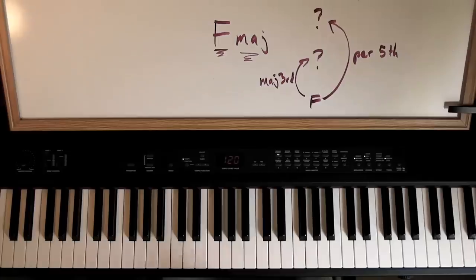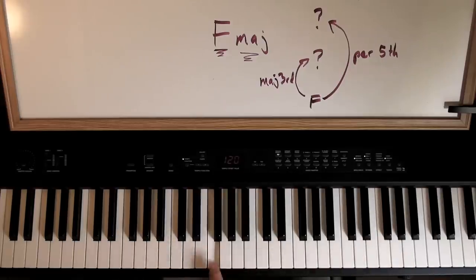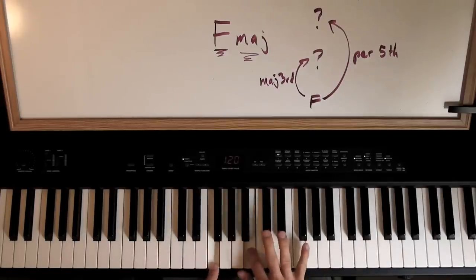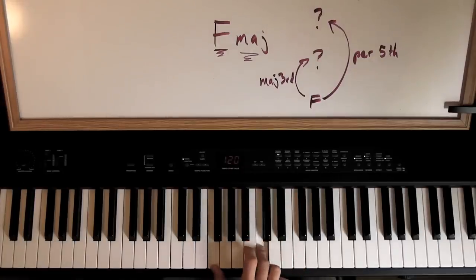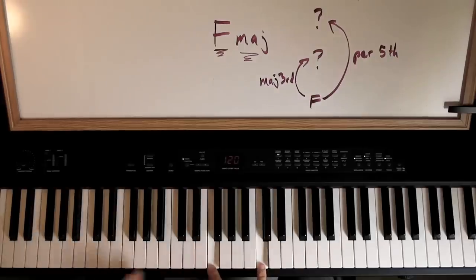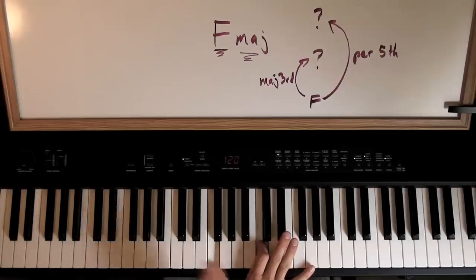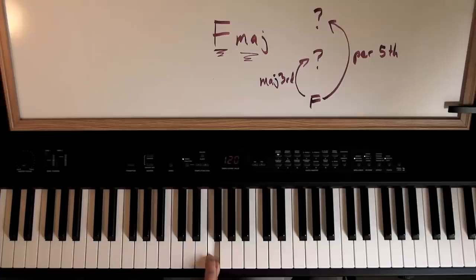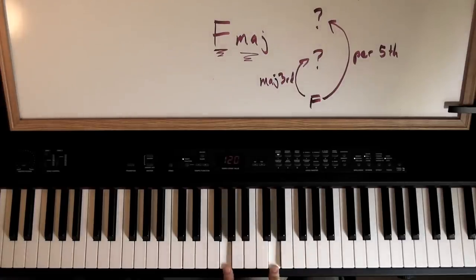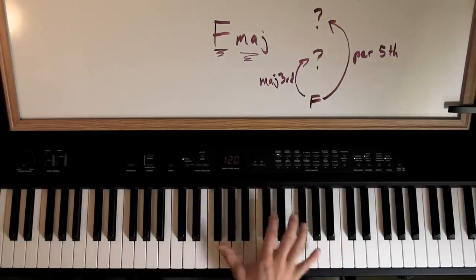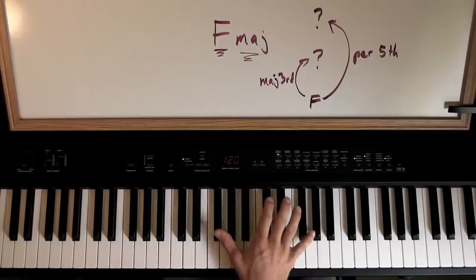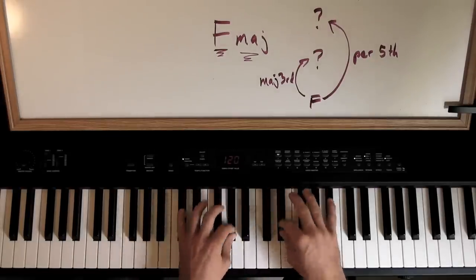To find a perfect fifth, you count three whole steps and a half step from the root. On a piano there's a handy pattern: if you start on a white note, skip over three white notes and you've got a perfect fifth. If you start on a black note, you want exactly two black notes in between. This makes perfect fifths really easy to find in most cases.